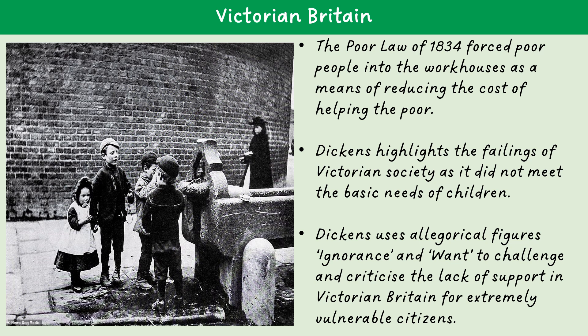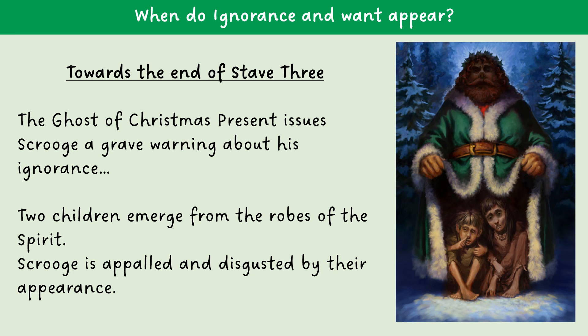Scrooge is forced to look upon society's most vulnerable and is confronted by his own selfishness and avarice. The characters Ignorance and Want were used to highlight social injustice throughout Victorian society, as it extended down to innocent children and nurtured them into becoming victims at such an early age. The characters appear towards the end of Stave Three when the Ghost of Christmas Present's time is quickly running out, and the ghost issues Scrooge a grave warning about his own ignorant attitude towards the poor.